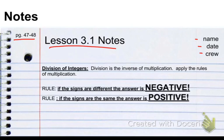Division of integers. Division is just the inverse, the opposite of multiplication. It's just taking multiplication and switching it around. Instead of how many are in a group of this, we want to know how many groups can I make from this. So the rules are pretty much the same.